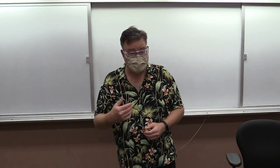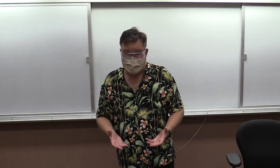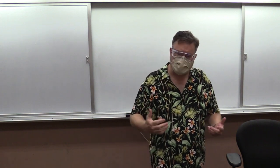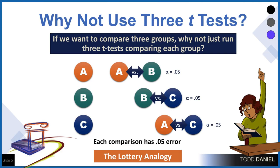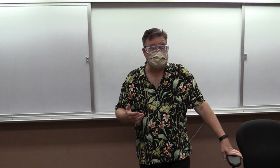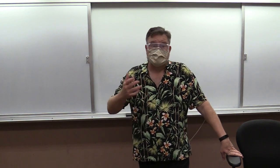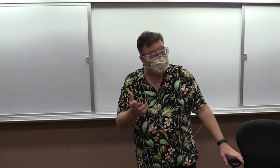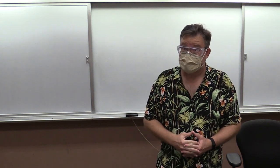At a 0.05 alpha level, five times out of a hundred we'll make a mistake. If we do one test we have a five percent chance of error, but if we do a second test comparing B and C, and a third comparing A and C, each has a five percent alpha. You might think that's a 15 percent total chance of error, but probability doesn't work like that — it would actually be quite a bit higher. Adding more groups and comparisons has a massive effect on our error rate.